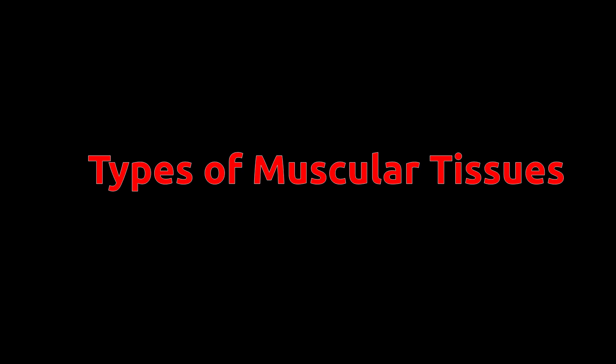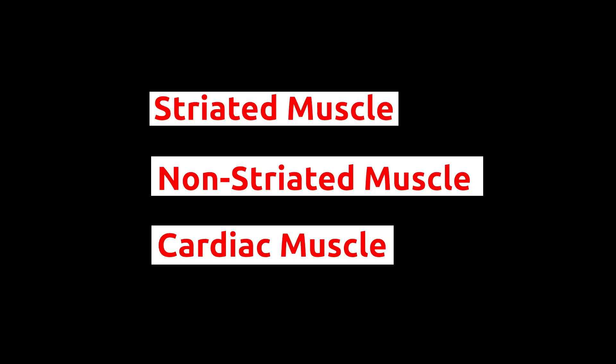There are three types of muscular tissues in our body: 1. Striated muscle. 2. Non-striated muscles. 3. Cardiac muscle.